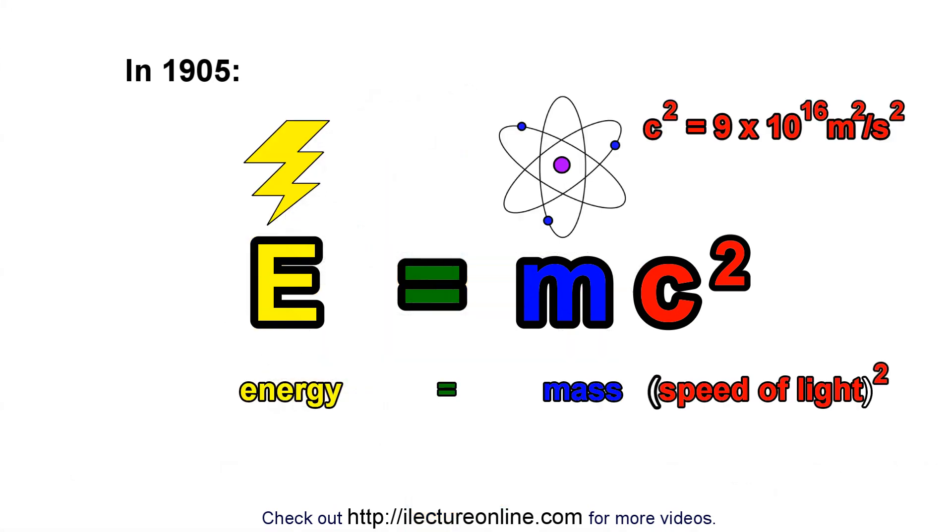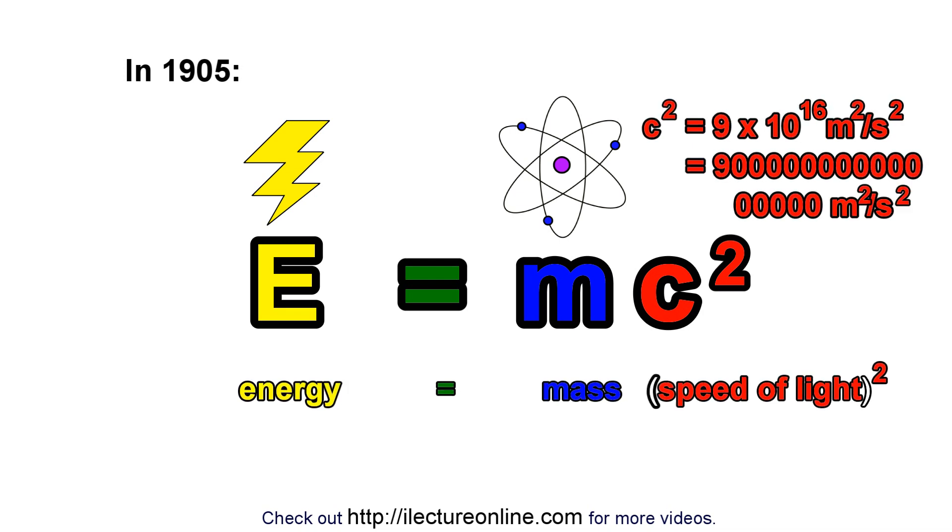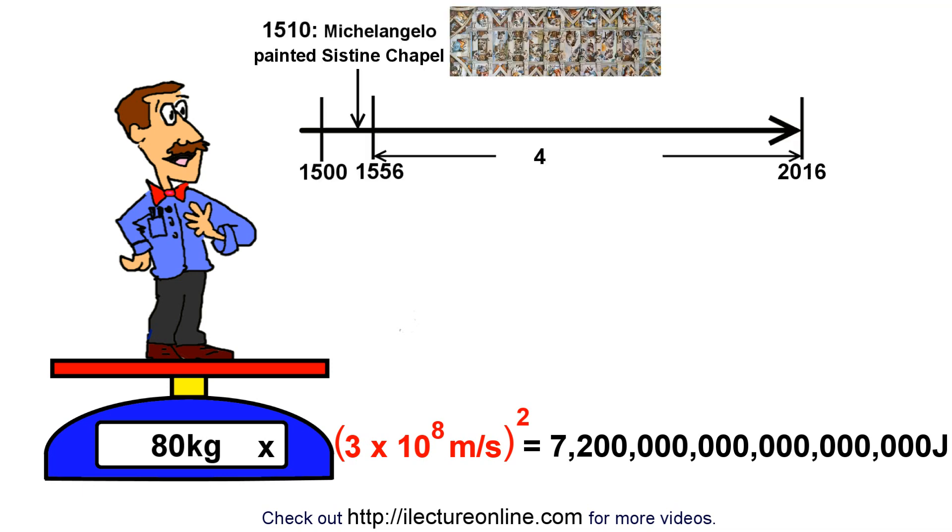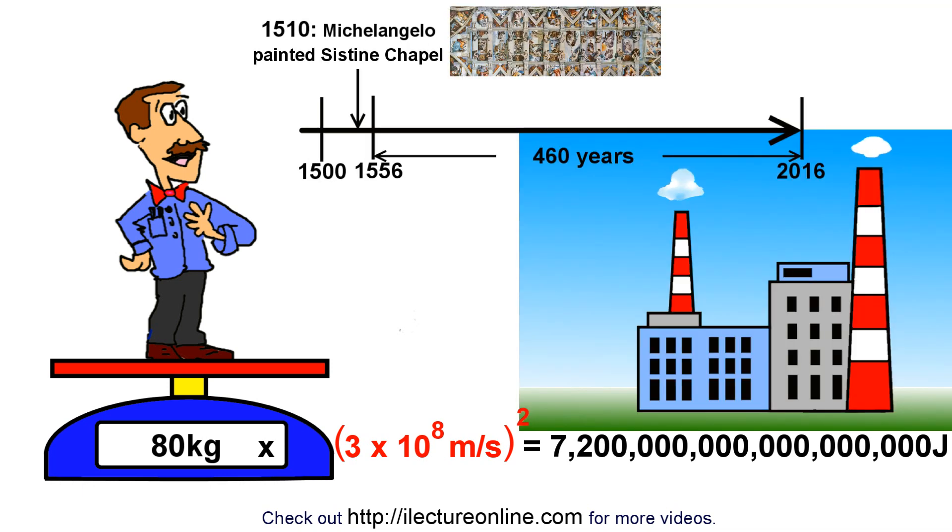Because c squared is such a large number, it takes an enormous amount of energy to make any sort of mass. For example, a typical person has a mass of about 80 kilograms. If you multiply that times the speed of light squared, you get 7.2 million trillion joules, or 460 years of energy production of a typical power plant to produce the energy to make one single person.